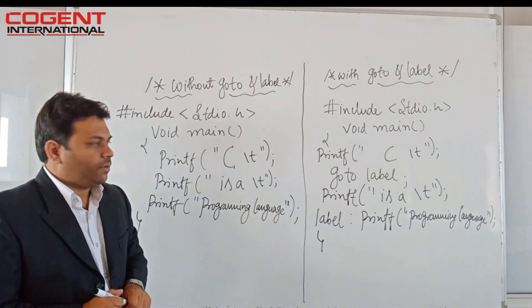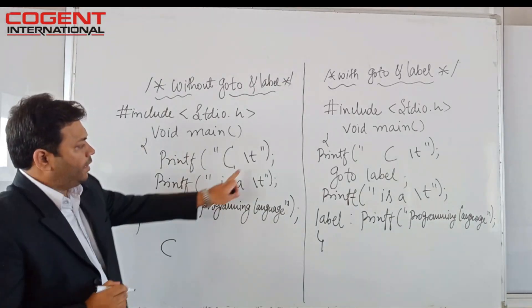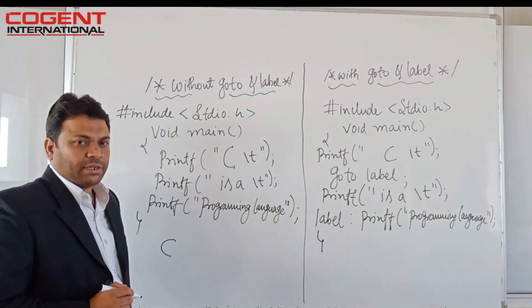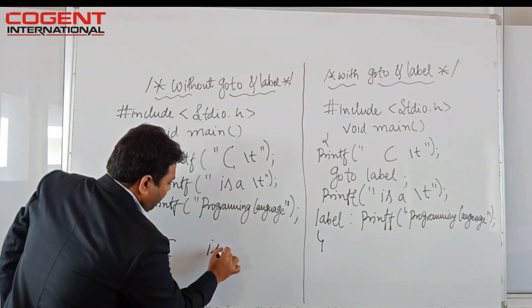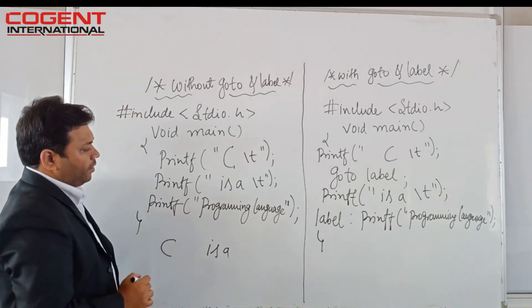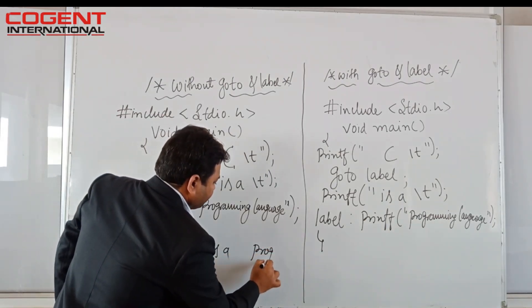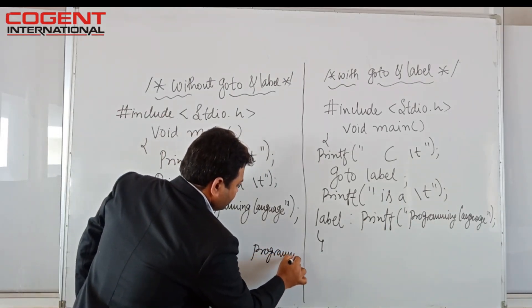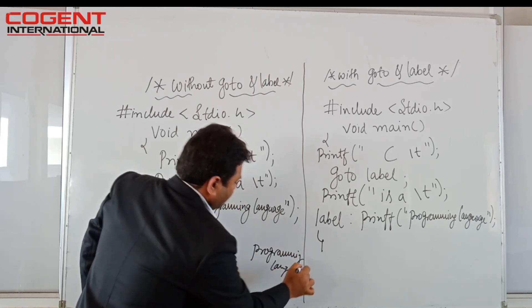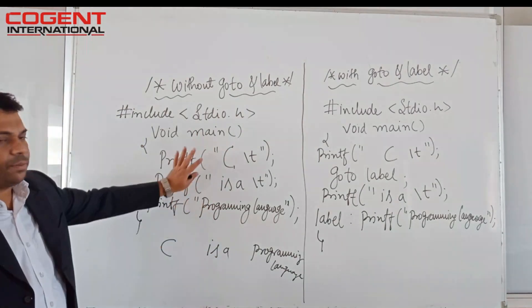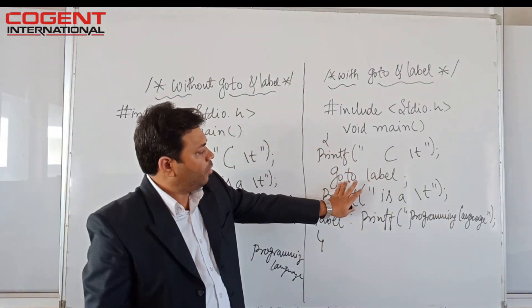What is the output of the program without goto? It will print 'C', then a tab space, then 'is a', then the next statement: 'programming language'. I hope you understood the output of this program.